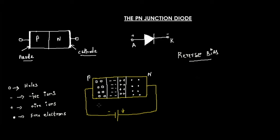You can see in this figure: the small zeros represent the holes in the P-type, the minus sign represents the negative ions, the plus symbol represents the positive ions, and the free electrons in the N-type are represented as dots.